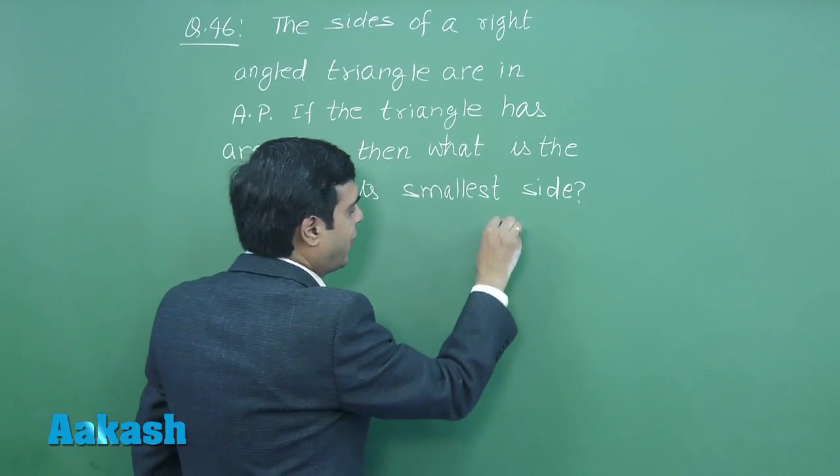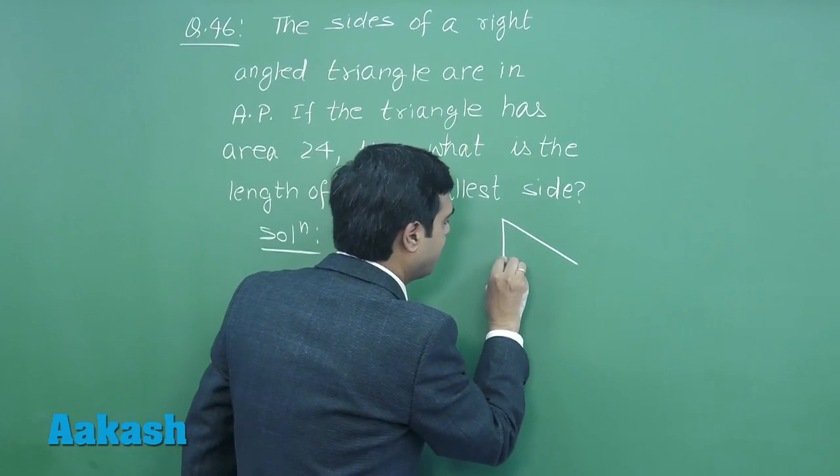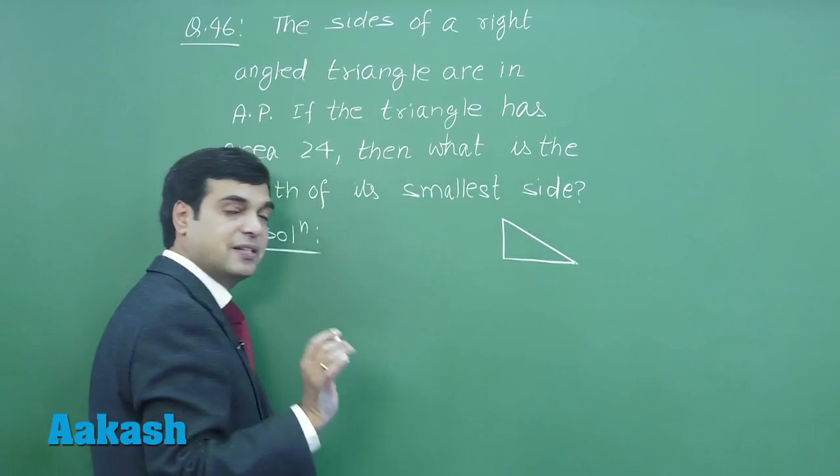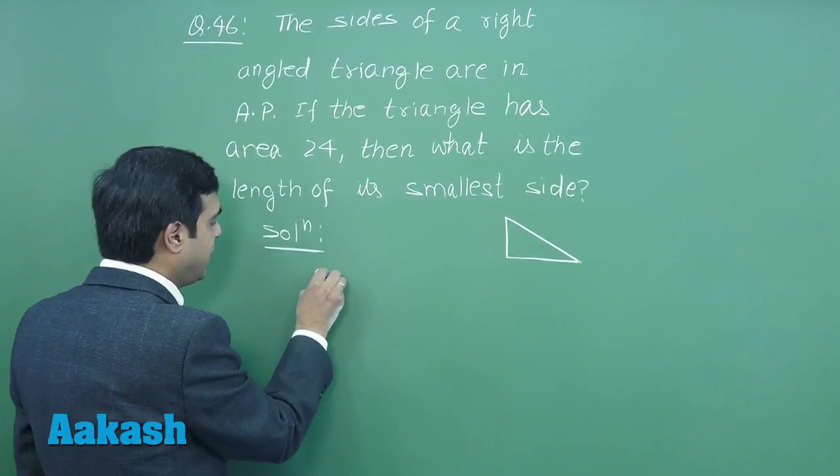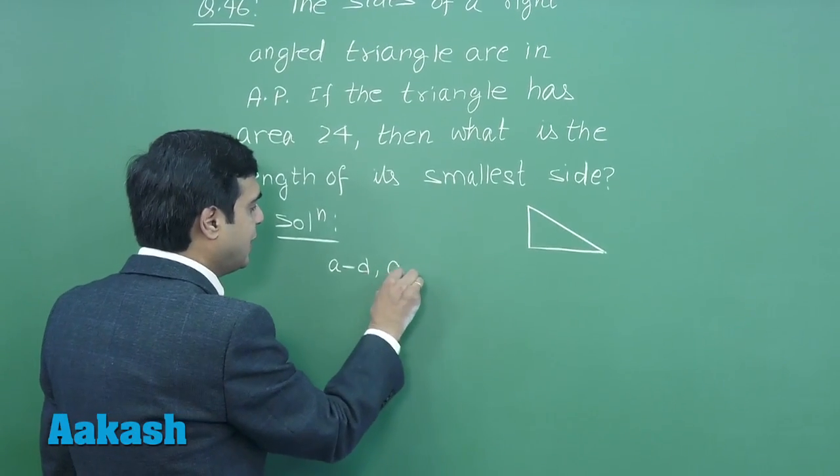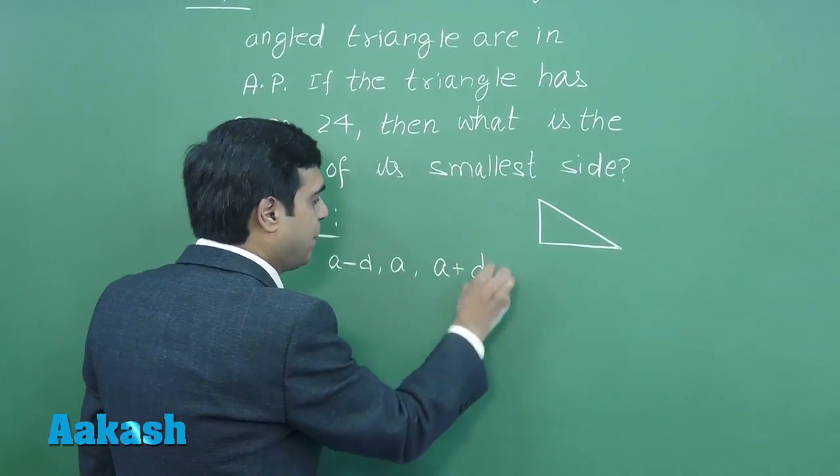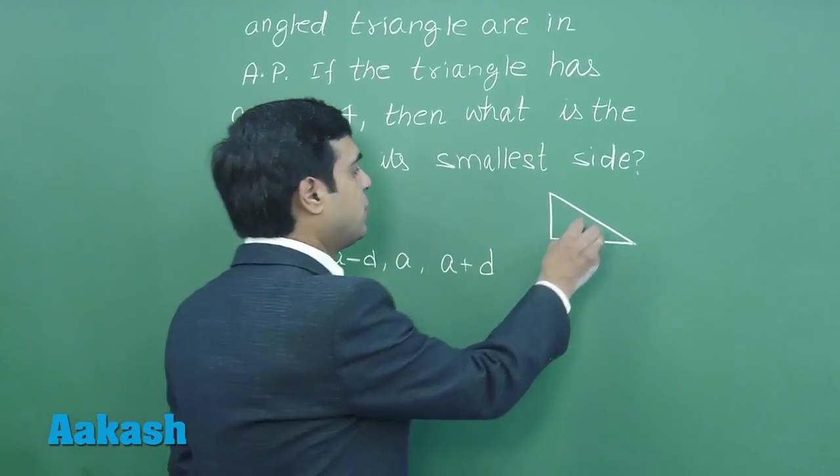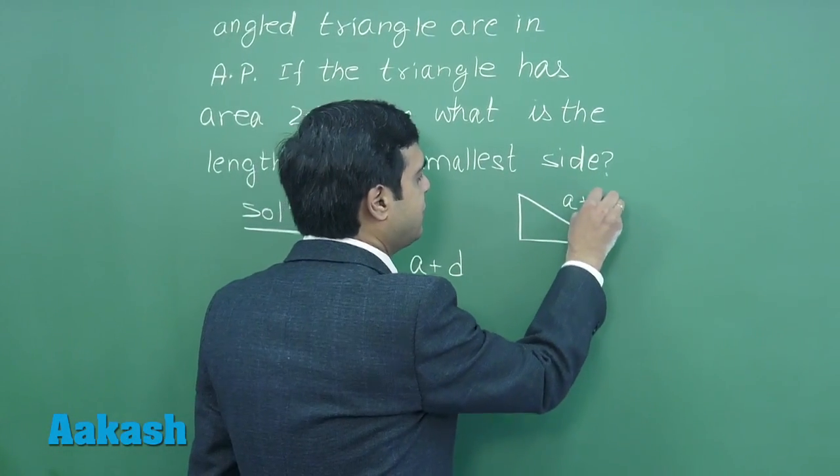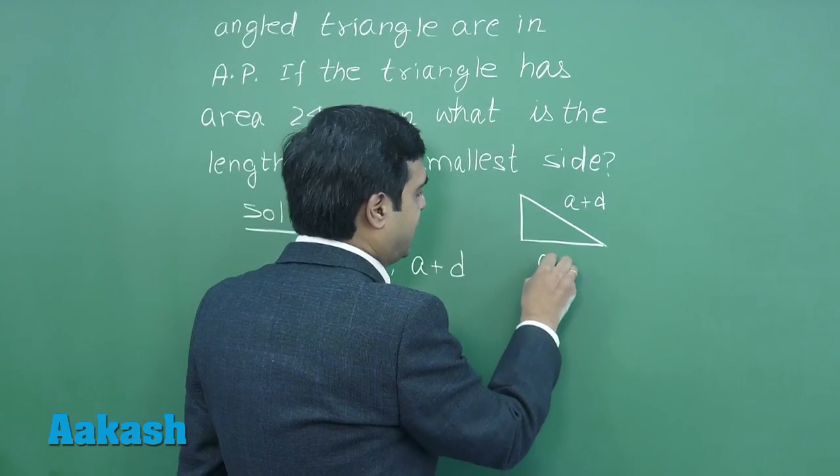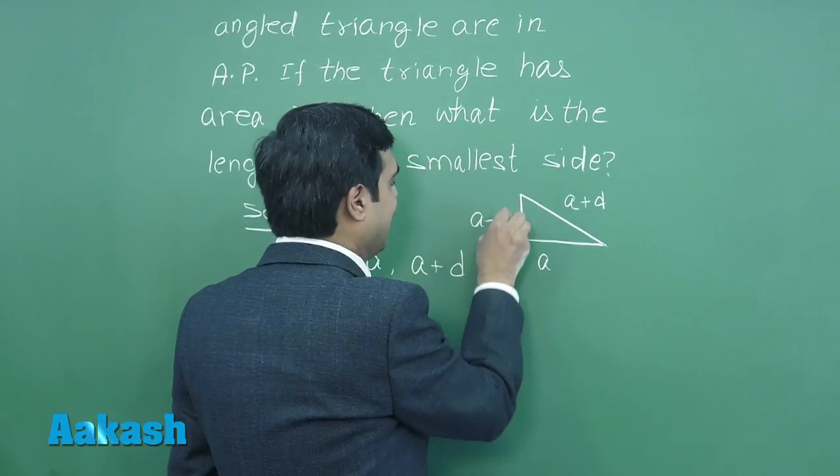For three sides, let us consider the sides be a minus d, a, and a plus d. A plus d being the largest one, so it is the hypotenuse. Consider this one a and this one a minus d.